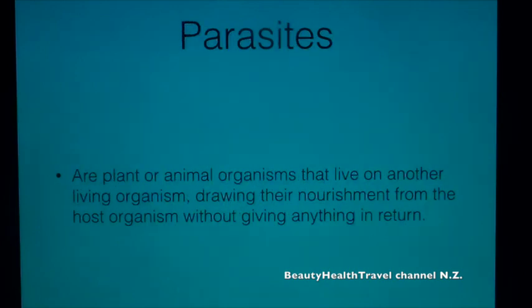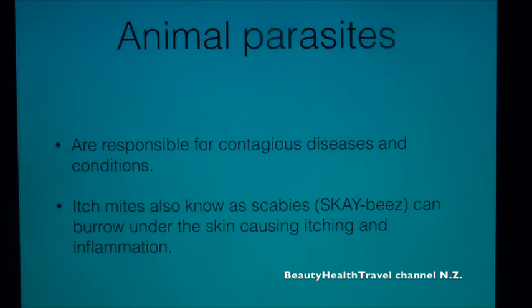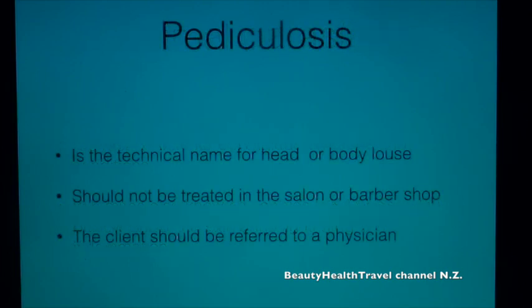Parasites are plant or animal organisms that live on another living organism, drawing nourishment from the host without giving anything in return. Plant parasites, also called fungi, can produce contagious skin diseases such as ringworm or favus. Examples of fungi are molds, mildews, rusts, yeasts, and male fungus. Animal parasites are responsible for contagious diseases. Itch mites, also known as scabies, can burrow under the skin causing itching and inflammation. Pediculosis is the technical name for head or body louse and should not be treated in the salon or barbershop — the client should be referred to a physician.